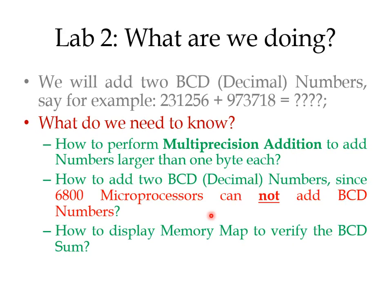Second, we need to know how to add decimal numbers, because our microprocessor cannot add BCD numbers directly. The BCD numbers are actually decimal numbers — we write those as binary, but these are decimal numbers. And number three, we need to know how to display the result, because at the end we need to display the sum on the terminal screen.